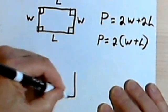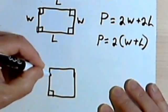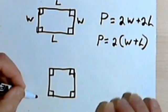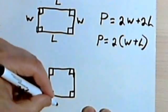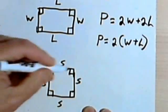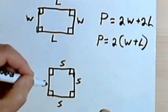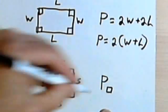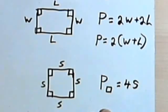A square is just a special rectangle. A square also has four sides, and each of the corners is a right angle. The only difference is that for a square, all the sides are exactly the same. So if I walk all the way around, I'll have four sides. The perimeter of a square is just going to be 4s.